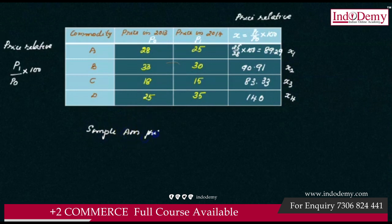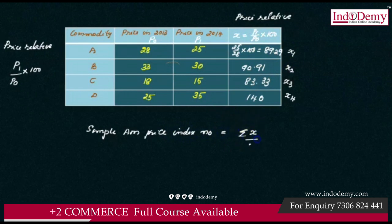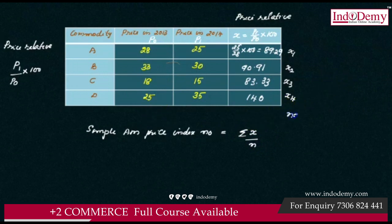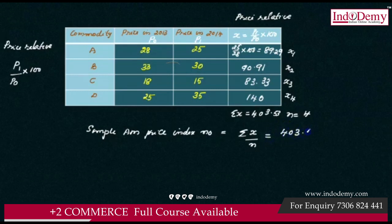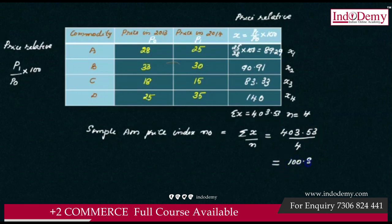For the arithmetic mean price index number, the formula is summation of x divided by n. The number of sets of data is 4, so n equals 4. Summation x is equal to 403.53. Therefore the arithmetic mean price index is 403.53 divided by 4, which equals 100.88. This is the first answer.